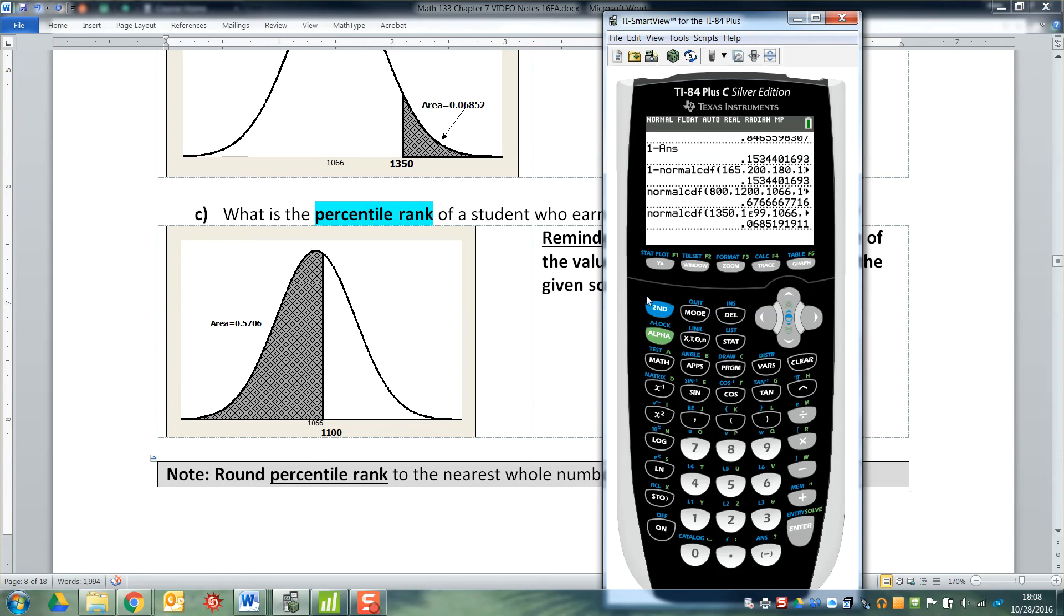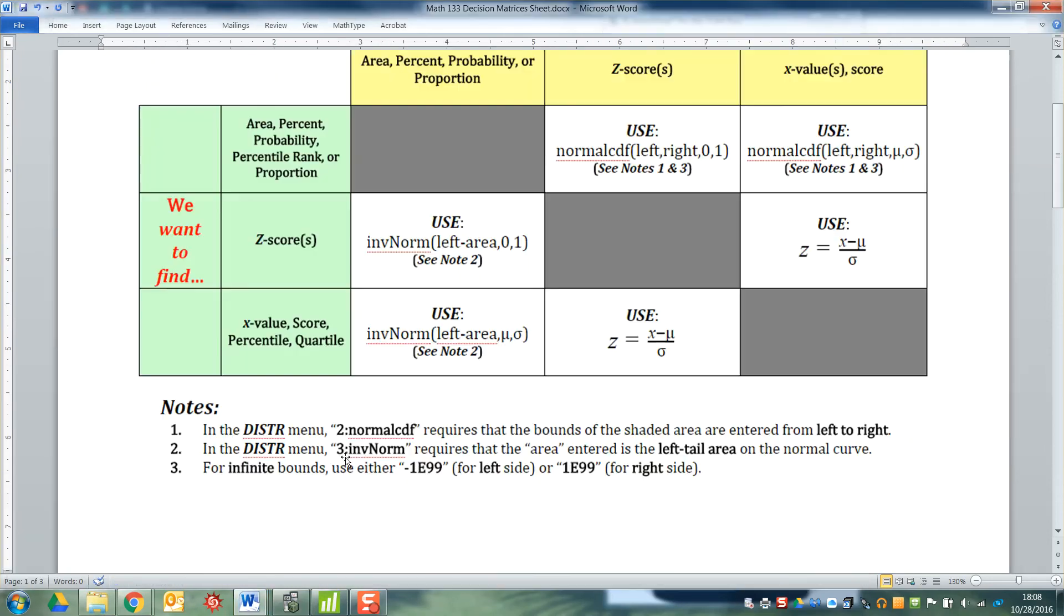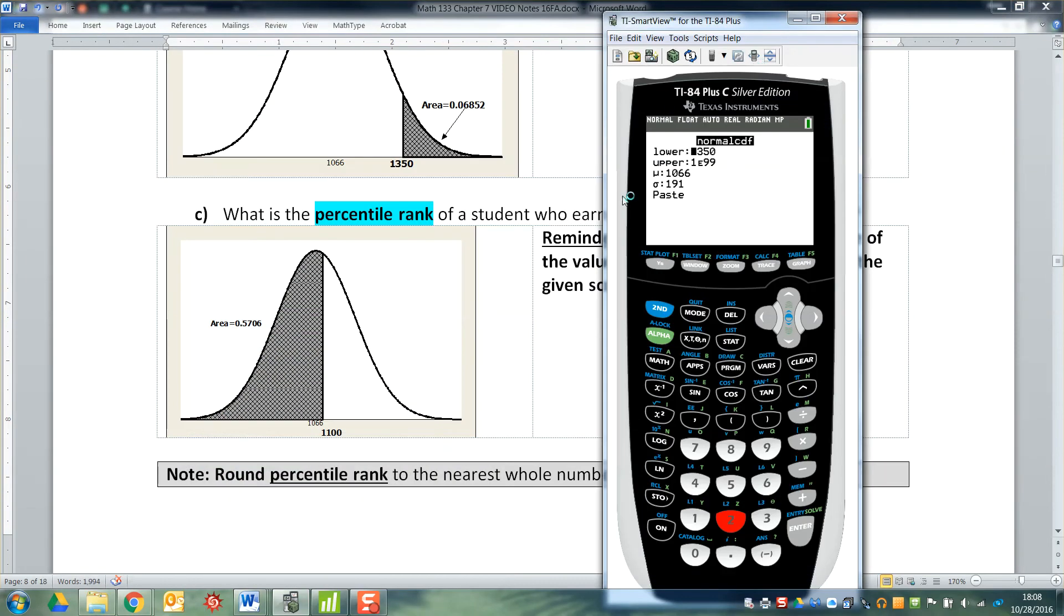So we want the area to the left. So that's normal CDF just like all the other ones. But remember note number three. It said in the decision matrix, if we don't have a left-hand bound, then we use negative 1E99 to stand for that little negative infinity. So type negative, which is this button down here at the bottom.